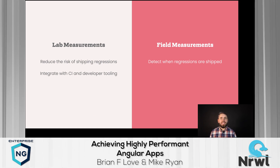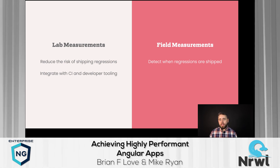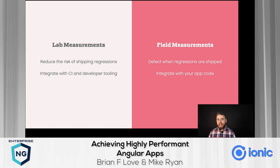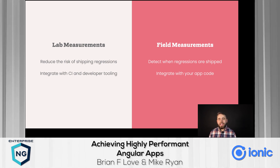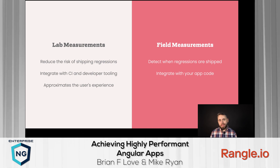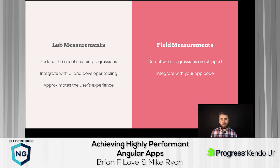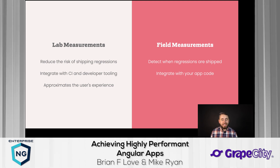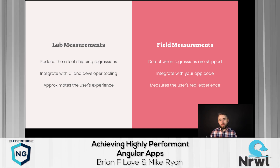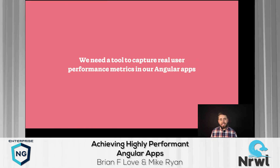A lab measurement is integrated with CI and developer tooling — running when you open a pull request or create a build. Field measurements are integrated directly in the application source code, measuring performance in real time as users interact with the app on their actual devices. A lab measurement can only approximate the user's real experience since we're running on beefy MacBook Pros or in CI — rarely indicative of older handsets with lower performance or users out in the field on a 3G connection.